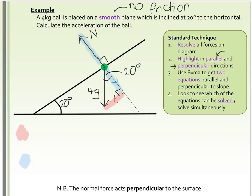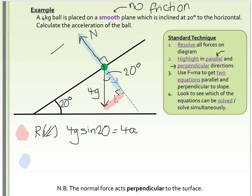I'll come up with a red and a blue equation, then look at which one helps me calculate the acceleration of the ball. Resolving parallel to the slope, going down the slope: I've got 4g, and it's opposite that angle of 20, so 4g sin 20, and that equals the mass of 4 times acceleration. So acceleration is acting parallel to the slope — I can add that to the diagram.